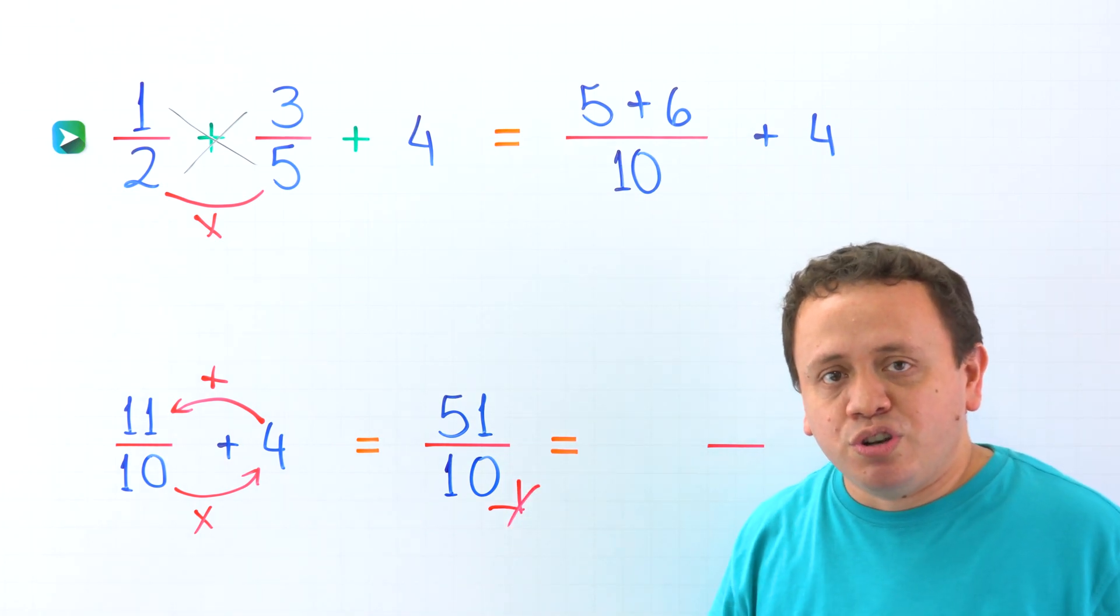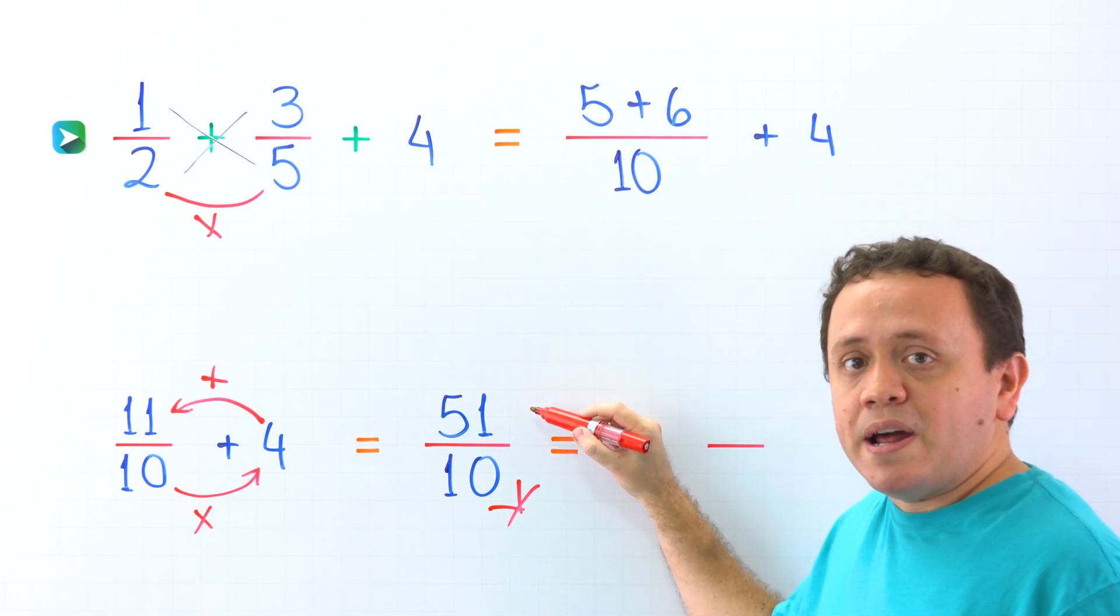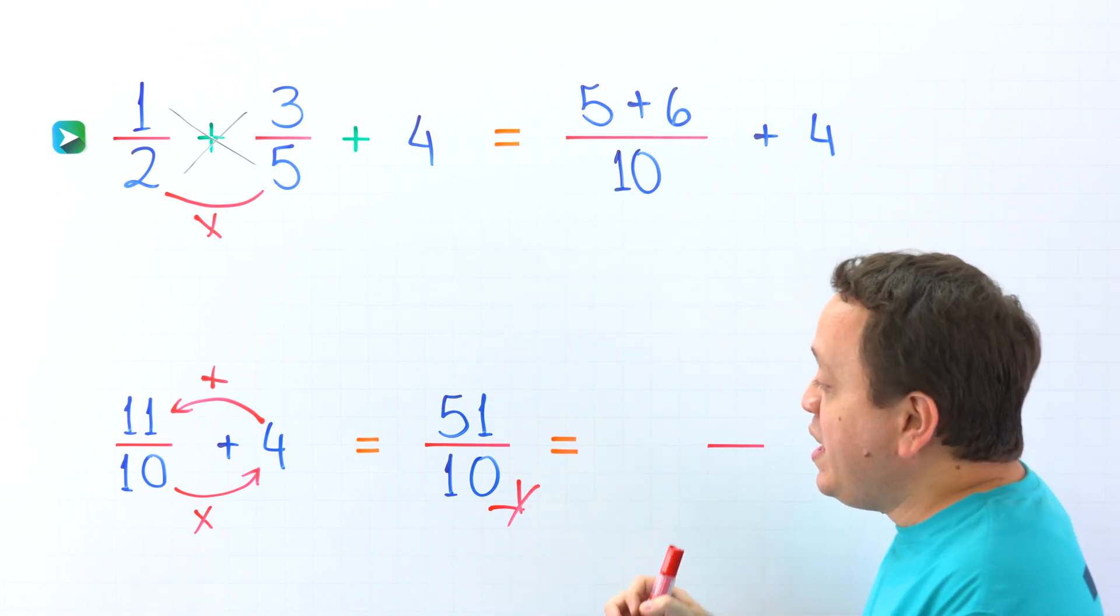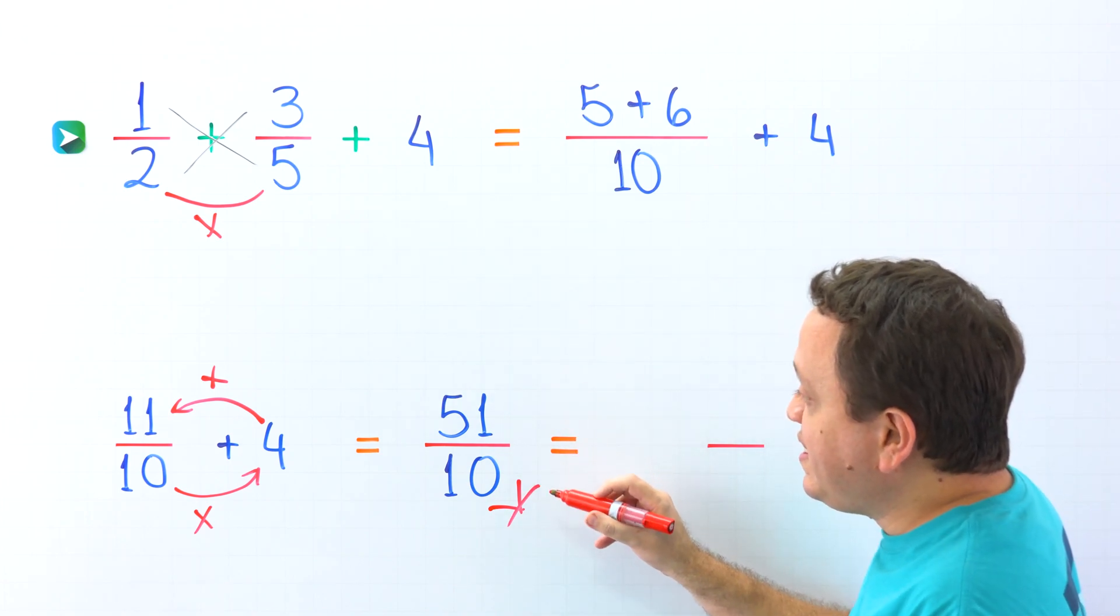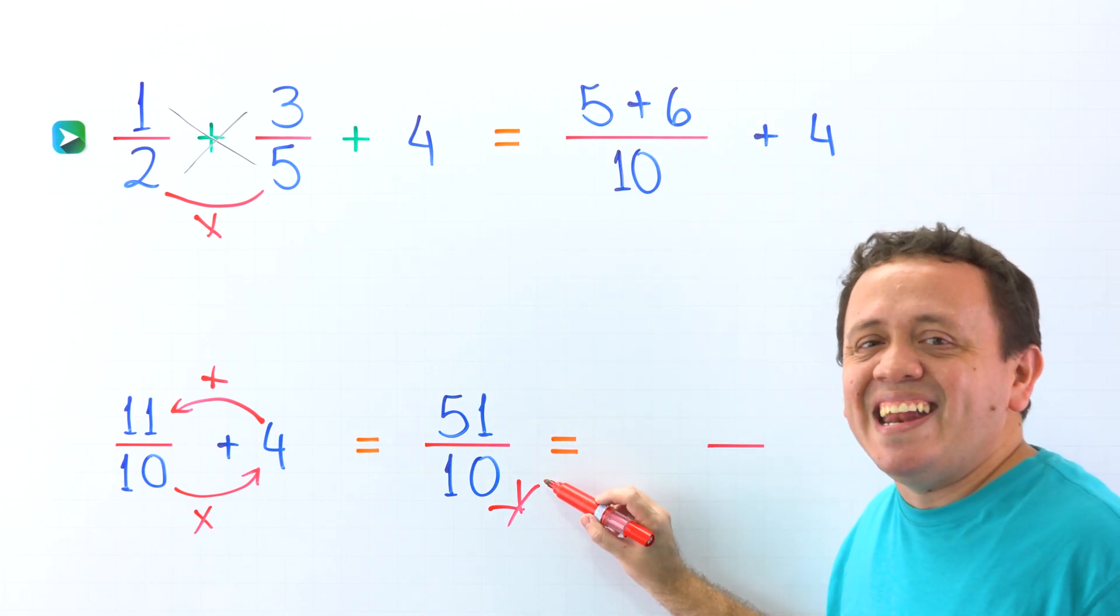At this point, we should remember the improper fractions. An improper fraction is a fraction where the numerator, the top number, is greater than or equal to the denominator, the bottom number. In this example, 51 tenths is an improper fraction, given that the numerator 51 is greater than the denominator, 10.